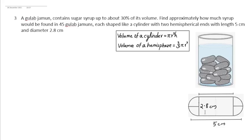Suppose this is one of the gulab jamun, shaped like a cylinder with two hemispherical ends. Its length is 5 cm and the diameter is 2.8 cm. Here the diameters of these two hemispherical ends and the cylindrical part are same, which is 2.8 cm.